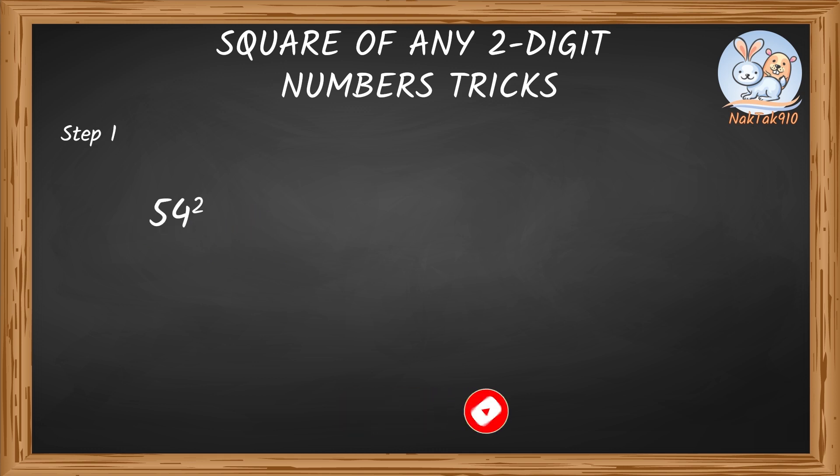Step 1. Square the first number and the second number. 5 square is 25. And 4 square is 16. Put these together and write them as a 4-digit number. So 2516. Step 2. Add a 0 below the last digit. So under 6.